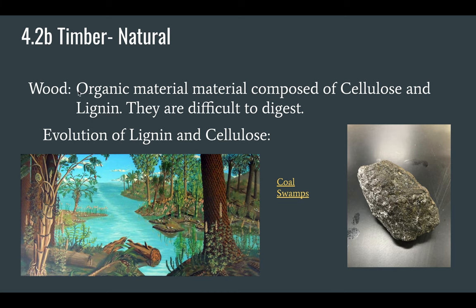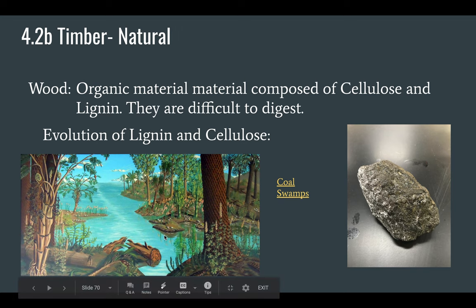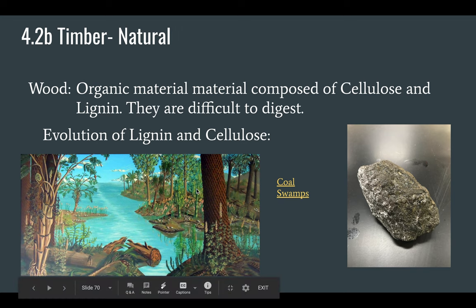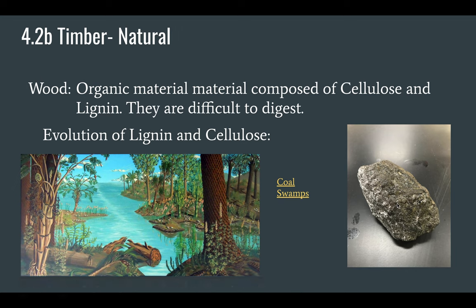Wood evolved hundreds of millions of years ago. When it first evolved back in the Carboniferous period — well before the time of the dinosaurs, around 300 million years ago — there was nothing that could eat it, so it would fall and build up in giant swamps in huge layers. That actually turned into coal beds, which is something we use today. Coal is one of our main sources of energy on Earth.